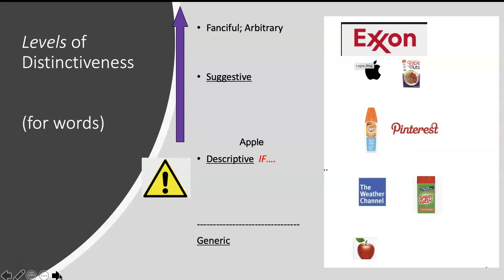This only works if there is secondary meaning. The two examples here, the Weather Channel and Spray and Wash, they describe what these things do. The Weather Channel describes a channel on TV about the weather and Spray and Wash describes what you do with this product: you spray it on laundry and then you wash it. But over time, we know both of these are brand names such that they are valid marks.